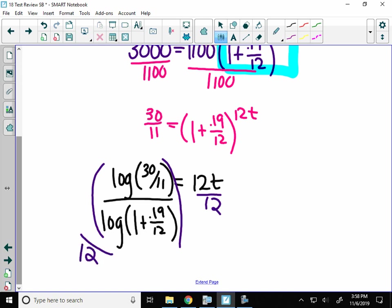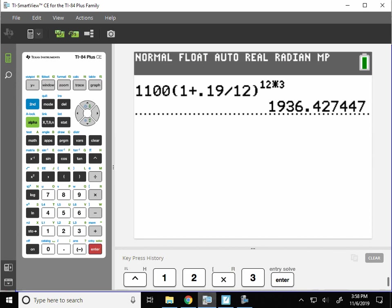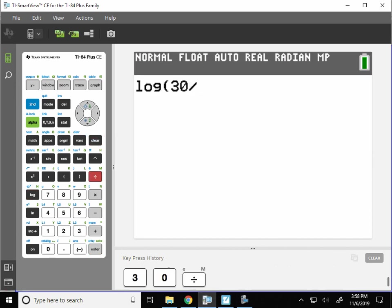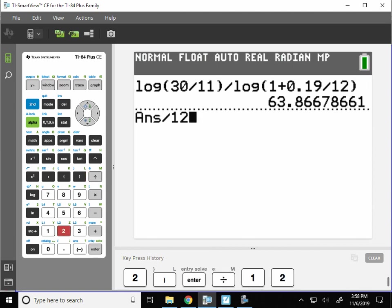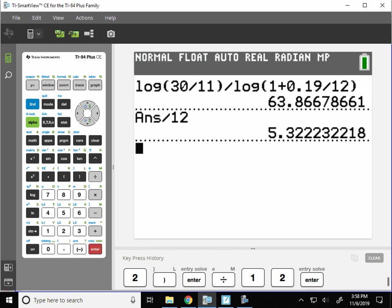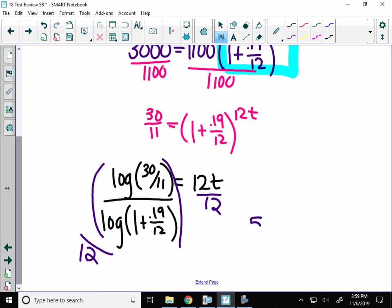And the last thing you'll have to do is you're going to take all of this log and divide it by 12. So this is finally where you pull out your calculator. I'm going to take the log of 30 divided by 11, close your parentheses, divided by our log here, and then divide that answer by 12. So it says it's going to take you about 5.322 years, just a little bit longer, to reach a debt of $3,000, which really isn't that long. All right, that's number 6 and number 7. We're on to number 8.